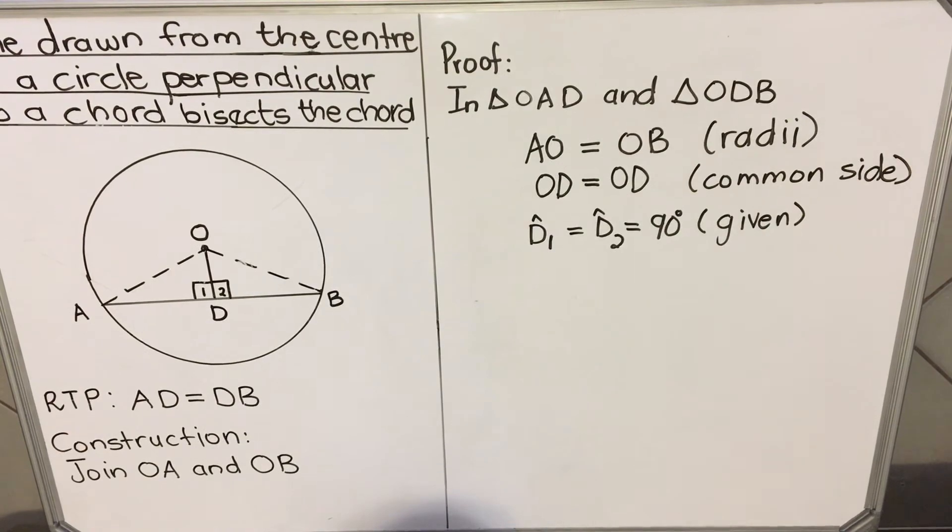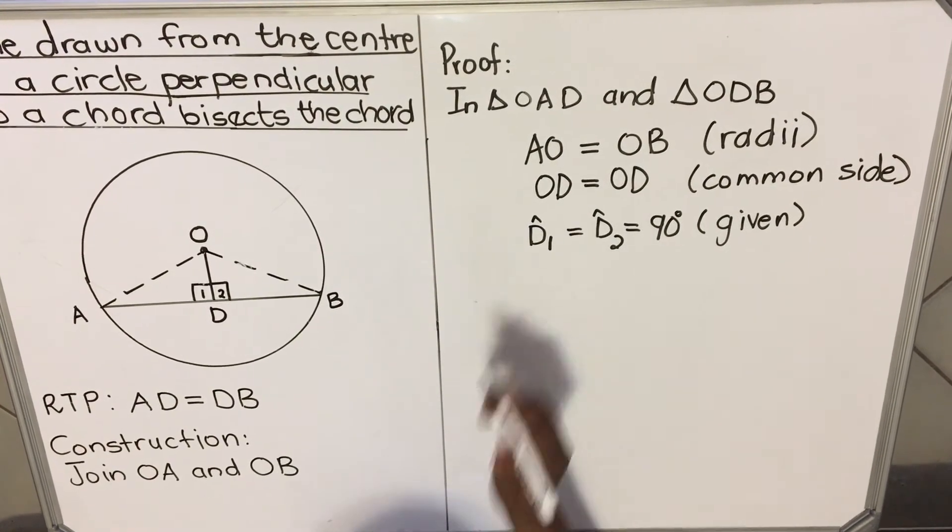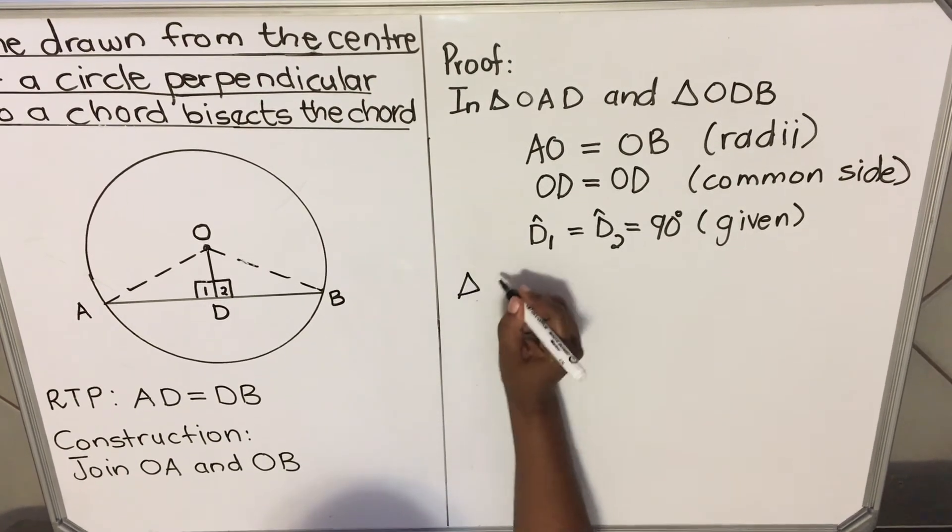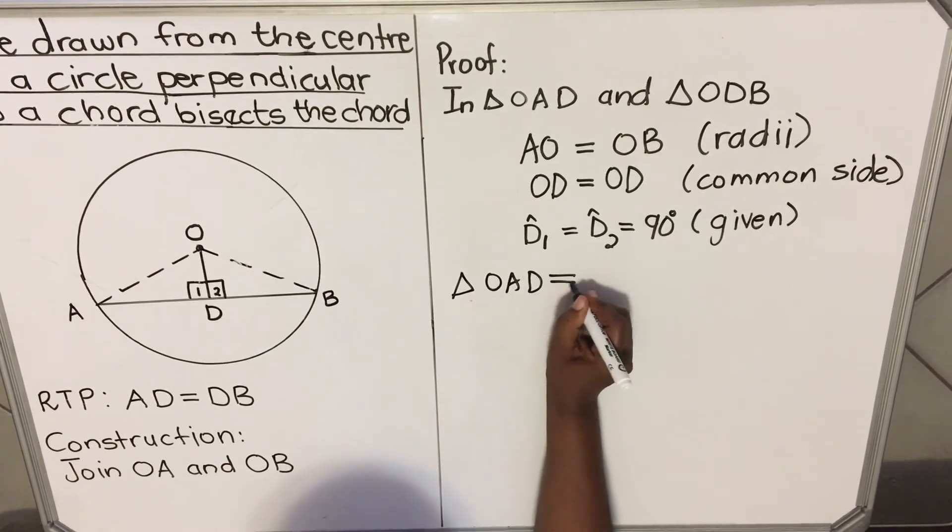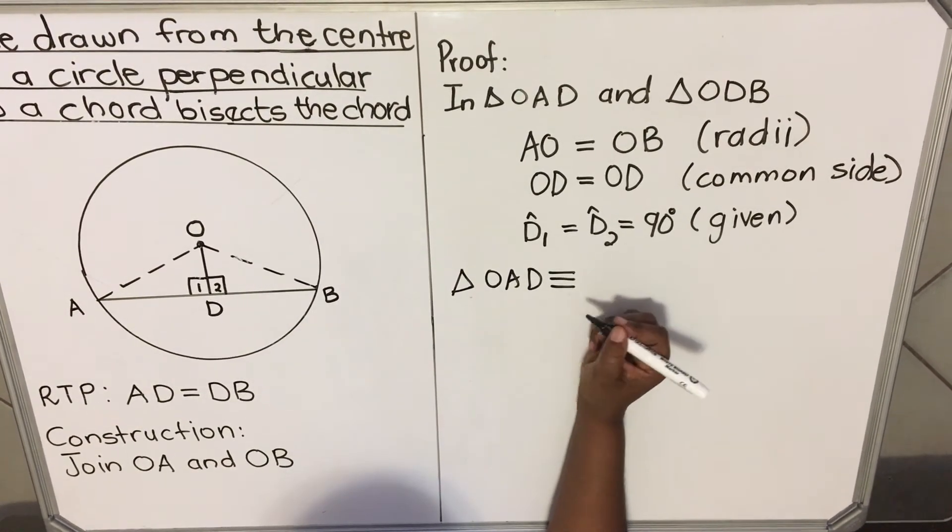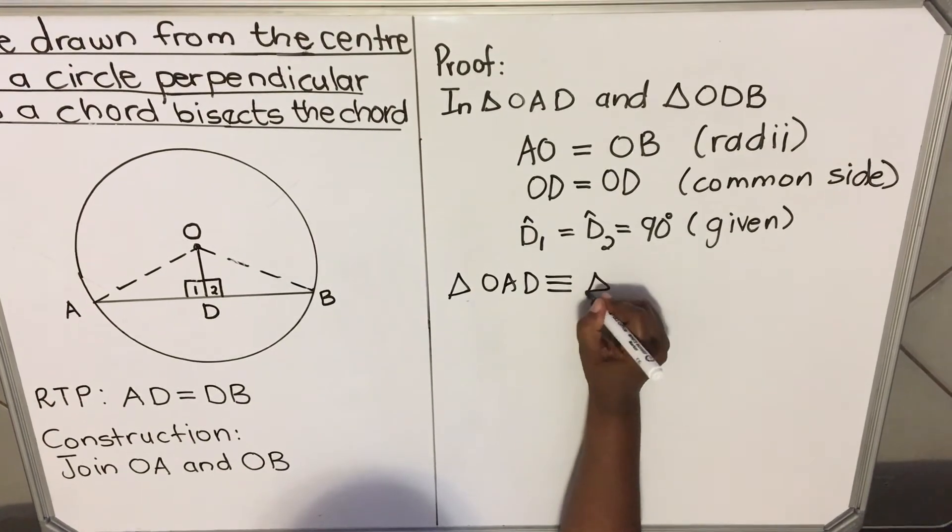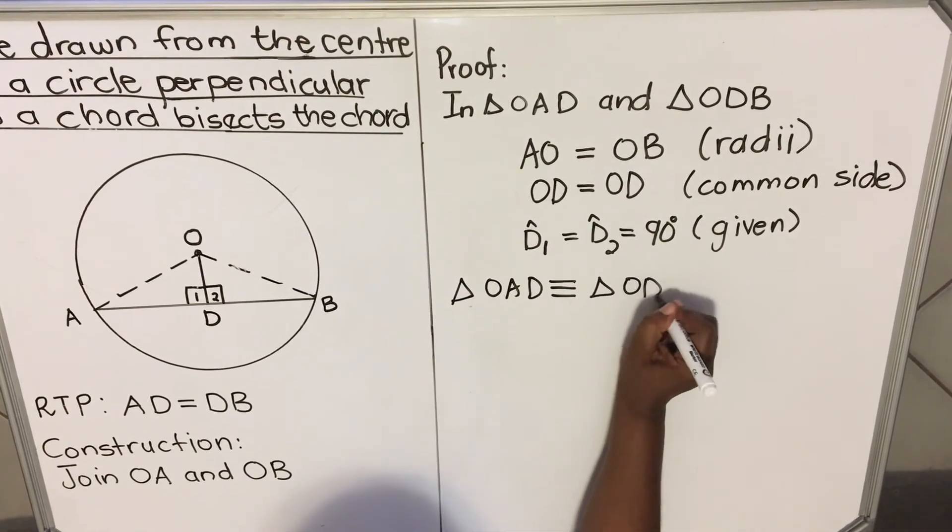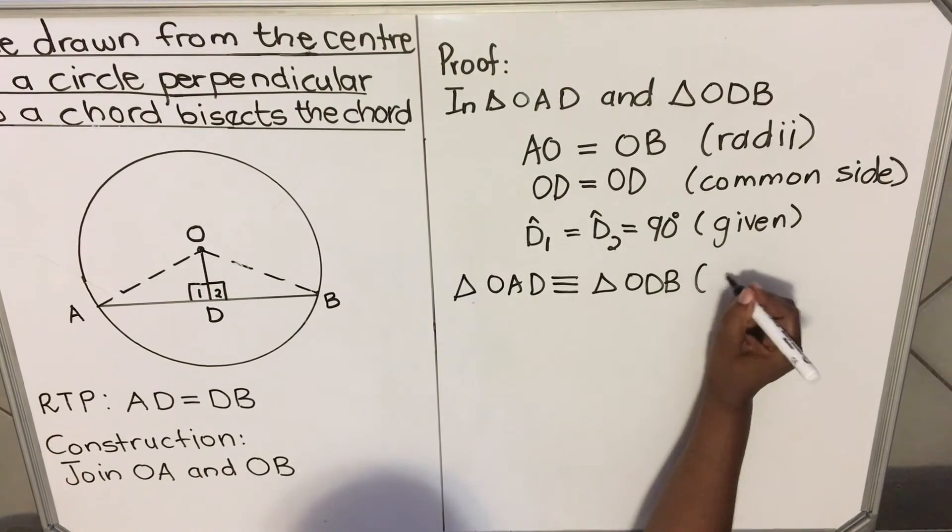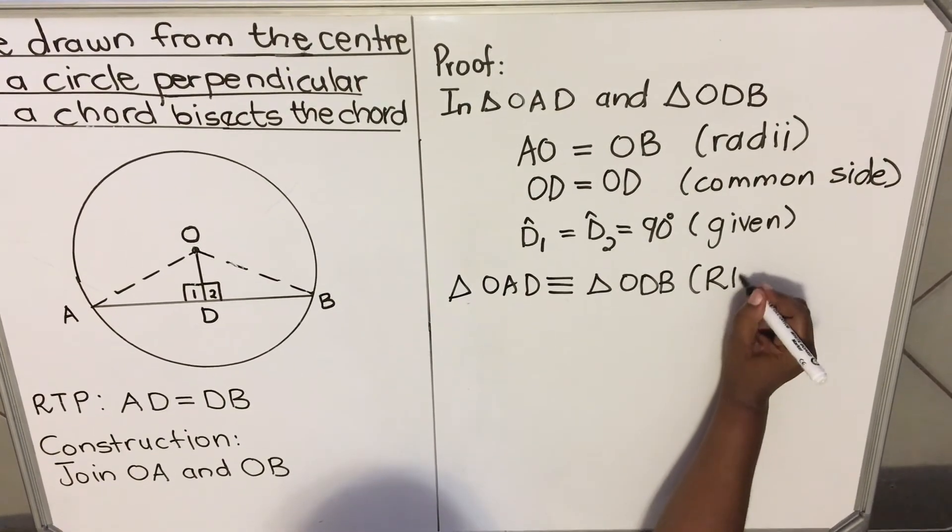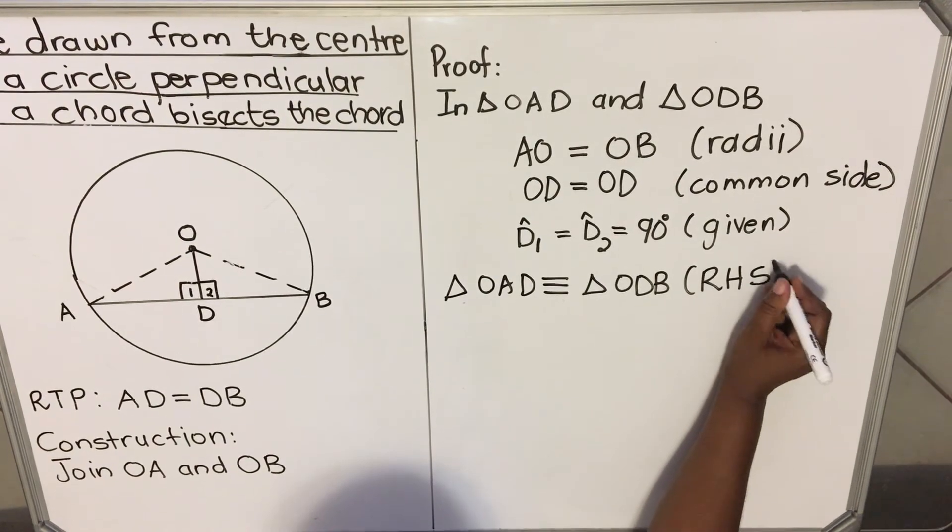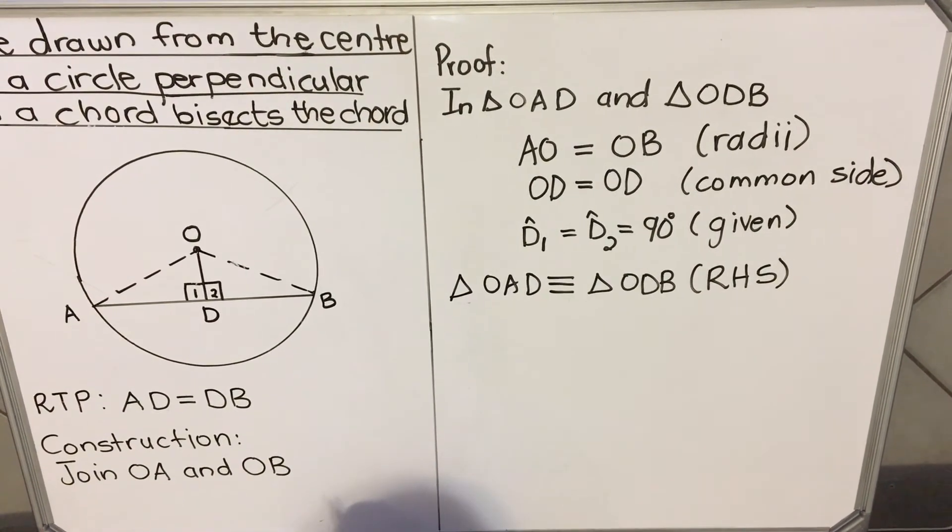Now we have the two triangles congruent. Triangle OAD, congruent is three lines like that, equal sign by three. It's congruent to triangle ODB. And the reason is you have a right angle, you have a hypotenuse, and you have a common side. So these two triangles are congruent.